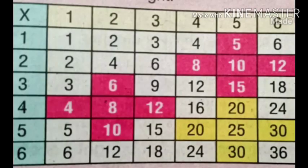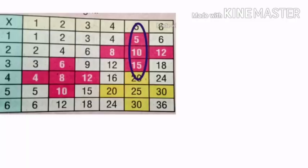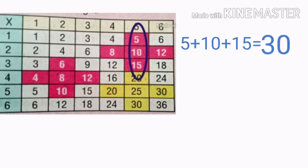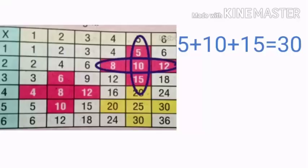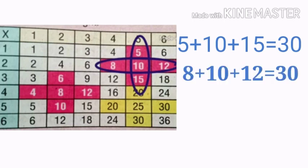Ok children, see the numbers in the colored boxes. In the first box, which are the numbers from top to bottom? Yes: 5, 10, 15. Let's add these numbers: 5 plus 10 plus 15 is equal to 30. Ok, which are the numbers from left to right? Yes: 8, 10, 12. Let's add these numbers: 8 plus 10 plus 12 is equal to 30. We got the same answers.